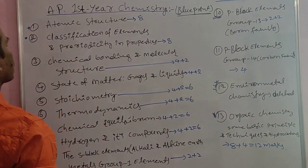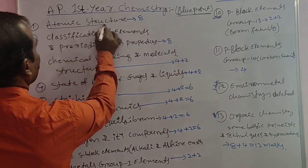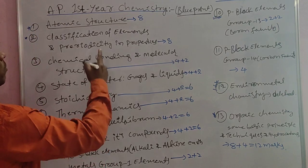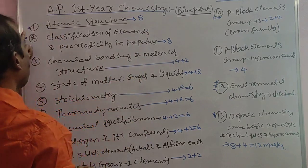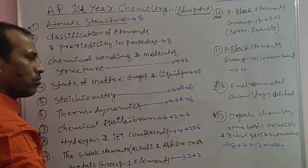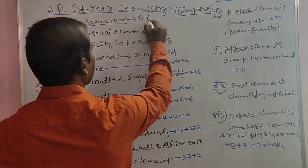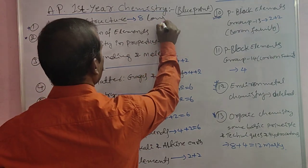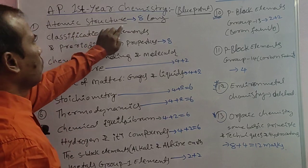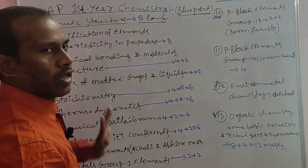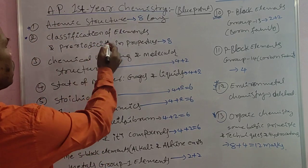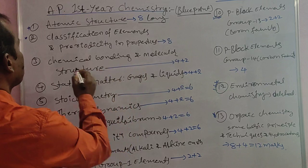The first topic is Atomic Structure. The weightage marks for Atomic Structure are 8 marks. This topic includes one long answer question. So the first topic, Atomic Structure, carries 8 marks — one long answer question is expected from this topic.